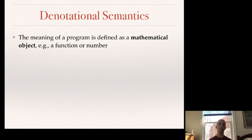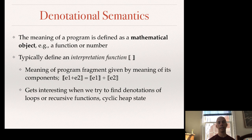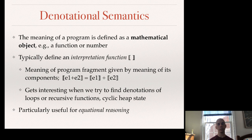The other style of language semantics is denotational semantics. This is like interpreting the program as a mathematical object by compiling to mathematics via a so-called interpretation function with semantic brackets. The meaning of a program fragment is given by the meaning of its components — it's compositional. So e1 plus e2 is defined as the meaning of e1 and the meaning of e2 — likely mathematical numbers — and the meaning of the whole program is the sum of those two numbers. Denotational semantics becomes challenging when modeling loops, recursive functions, or worrying about the heap and cycles within it.